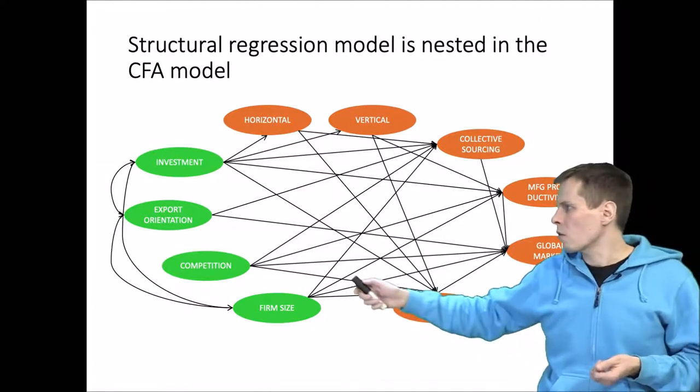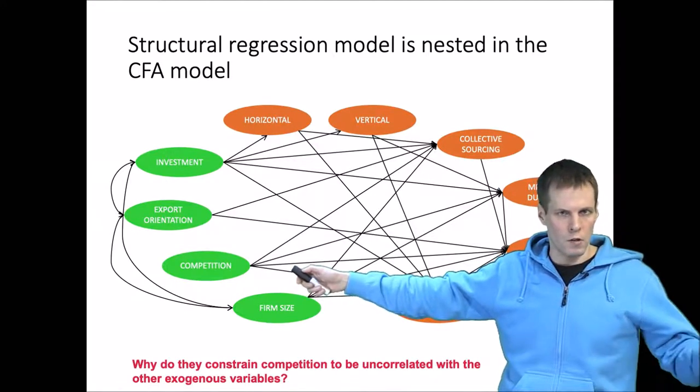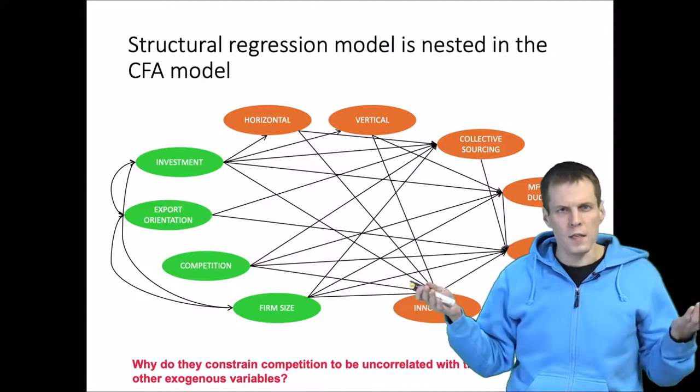Interestingly, the competition variable here is constrained to be uncorrelated with all the other exogenous variables. Why is that the case?